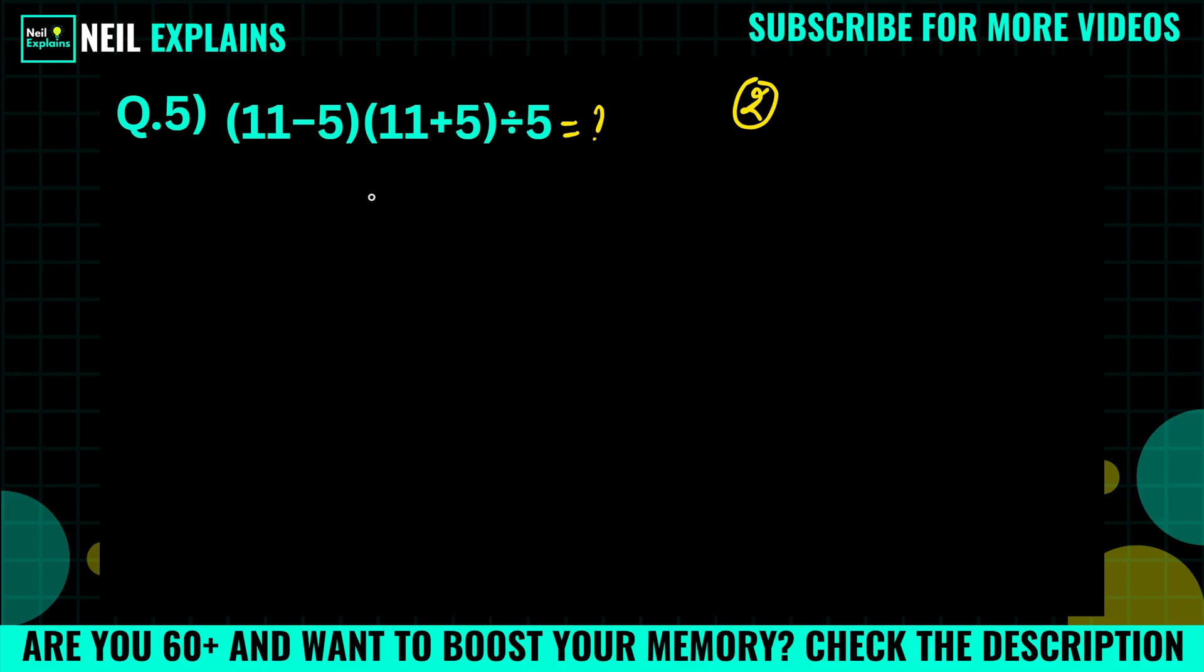Now time is up. We will write the PEMDAS and we will solve this stepwise. So according to PEMDAS, we have to solve this parenthesis part first. And here what we will solve: this part 11 minus 5, we will get 6, and 11 plus 5, we will get 16.